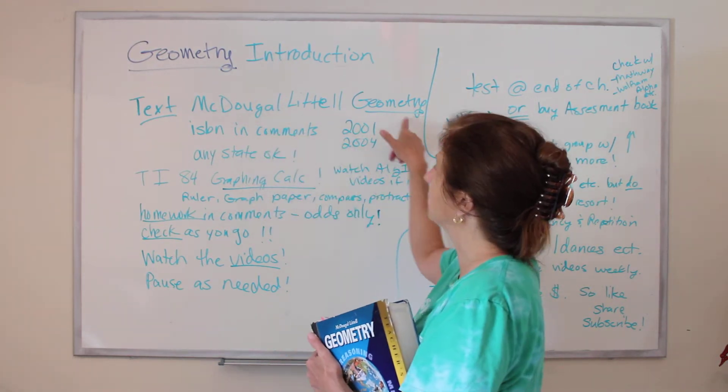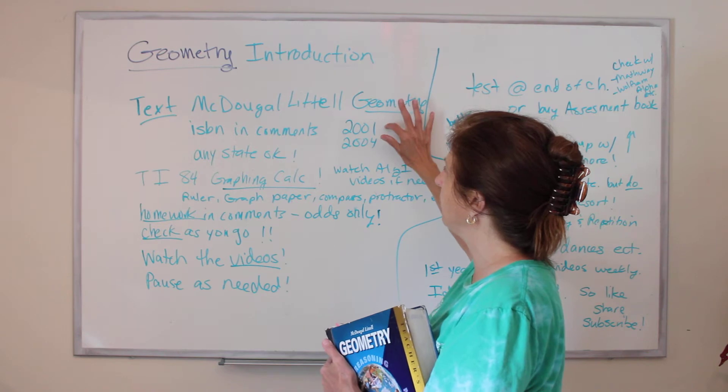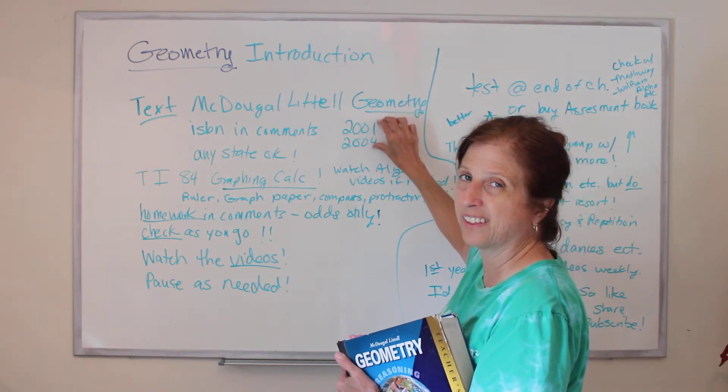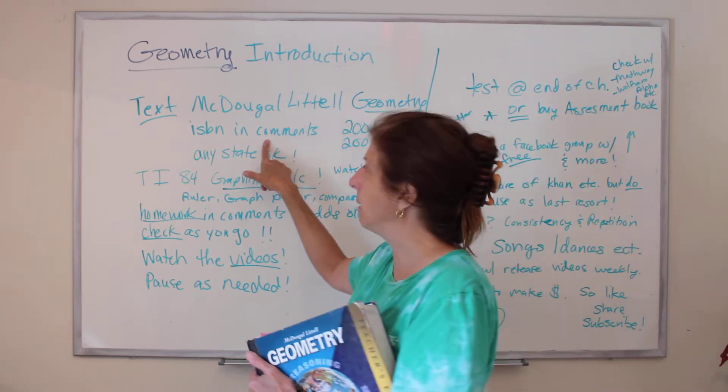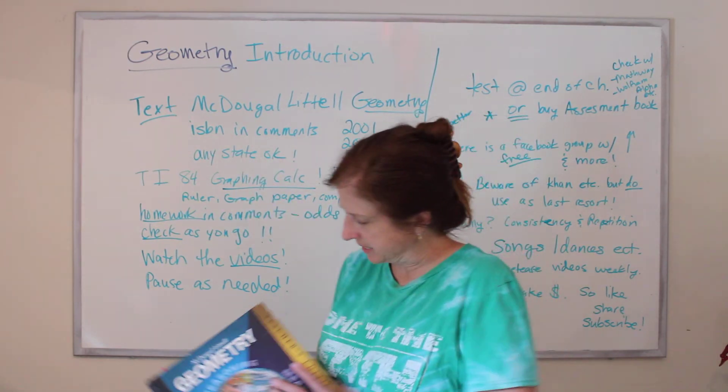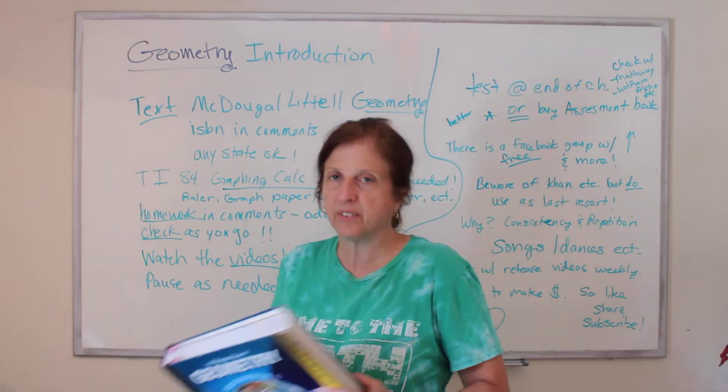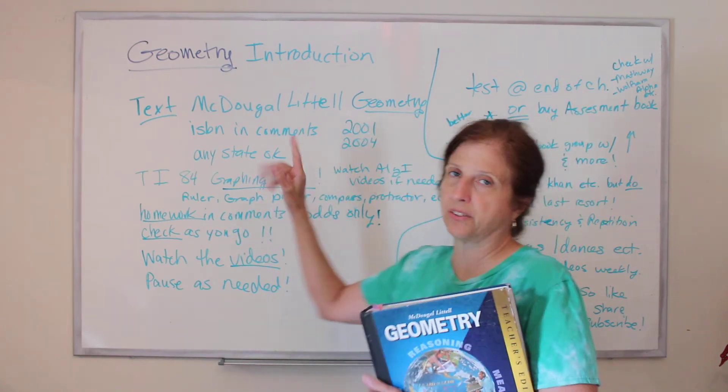Your students won't have that yellow part right there. It's McDougal Littell Geometry. 2001 or 2004, I think those editions are the same, but I'll put the ISBN that works in the comments. And some of them say like California edition and stuff. Any state is okay. They're all the same.